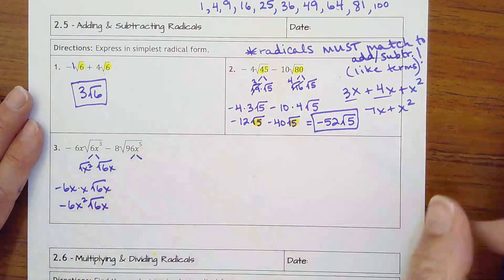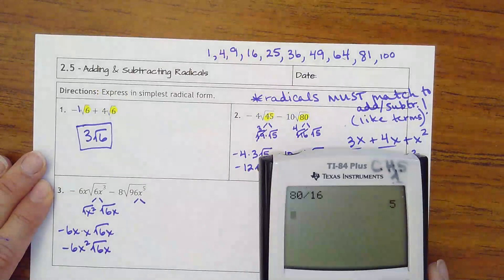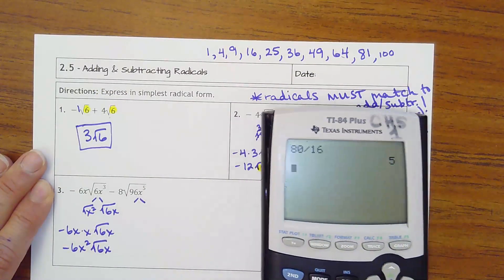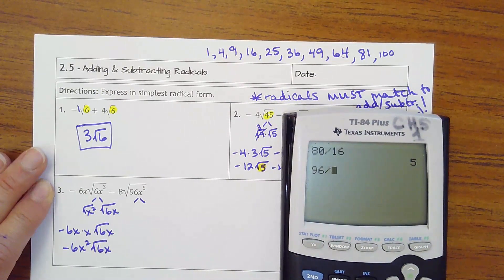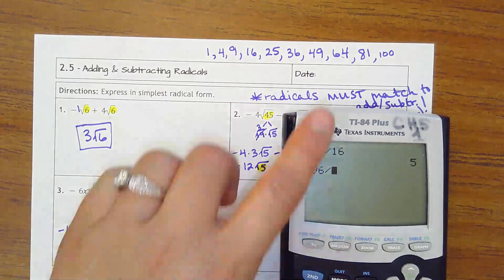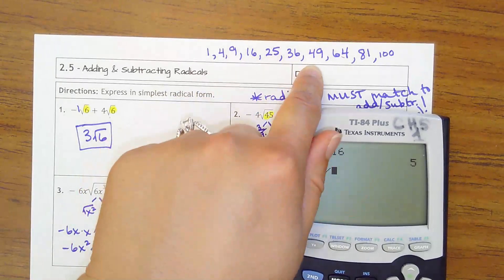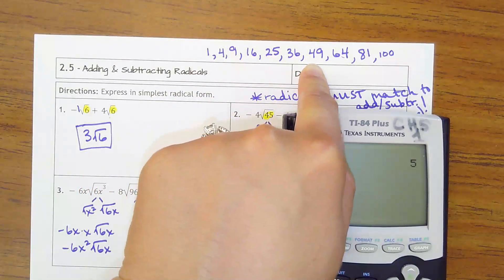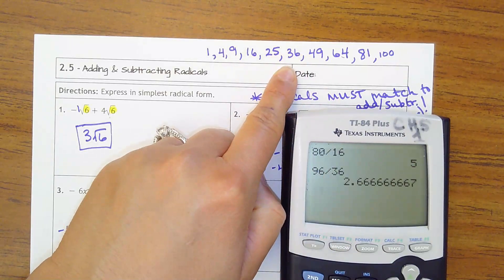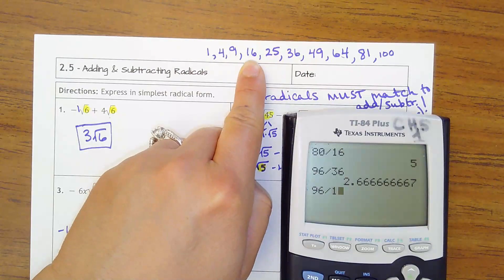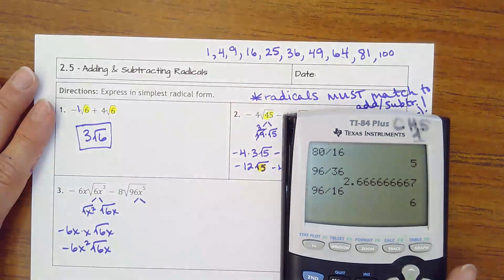For 96, let's look at our list. What can it divide by? Not 49. Why not 36? Not 25. 16? Yes, 16 and 6.